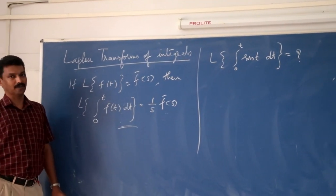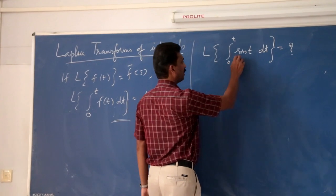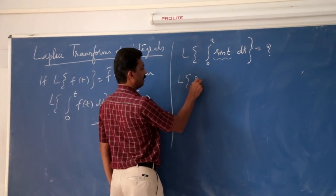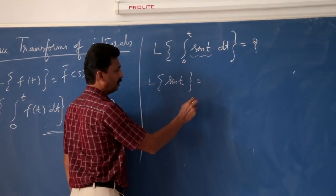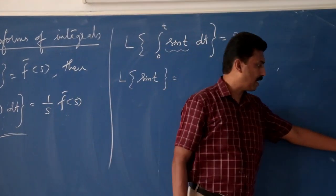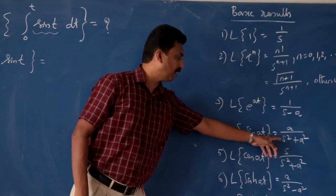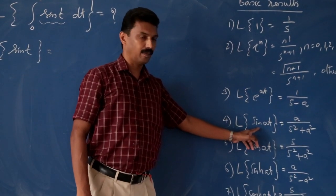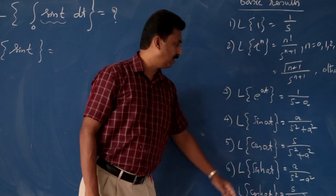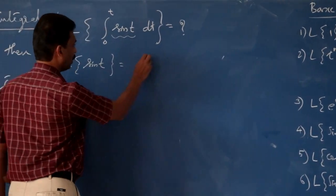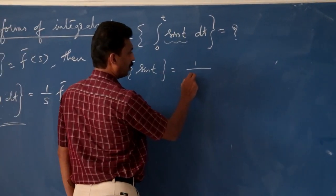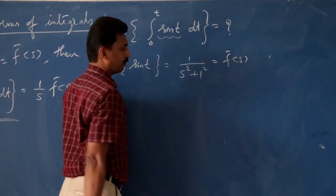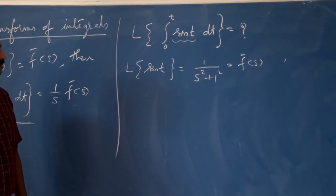First, we will find the Laplace transform of sin t. We know that the Laplace transform of sin(at) is equal to a divided by s² + a². Just replace a by 1 to get the Laplace transform of sin t, which is 1 divided by s² + 1. This is nothing but F̄(s).